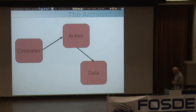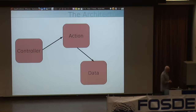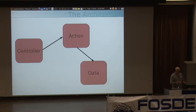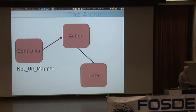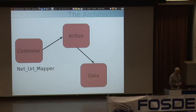We have a front-end controller system that, based on parameters coming in through GET or URLs, instantiates a particular action. That action uses one of a number of data classes to access the database, do business operations on that data, and generate output for the user. Our controller uses a PEAR library called Net_URL_Mapper, which generates URLs backwards and forwards — if you provide a path, it generates out parameters; if you provide parameters, it generates the path.